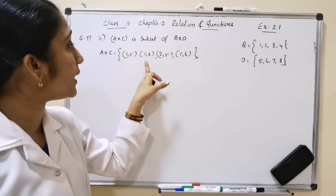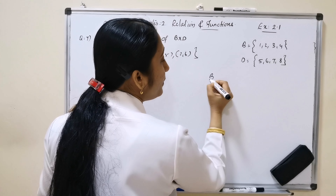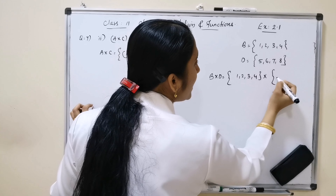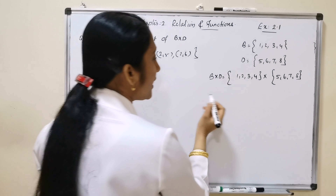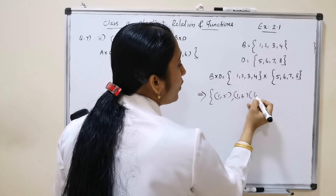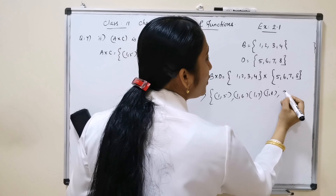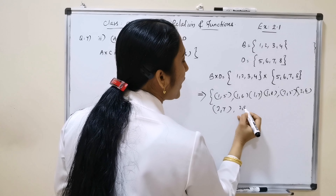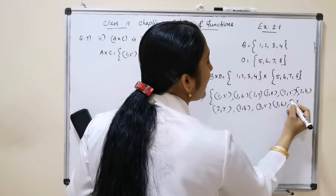Question 7 part (b): We need to verify that A×C ⊆ B×D. We already found A×C = {(1,5),(1,6),(2,5),(2,6)}. Now we find B×D, where B = {1,2,3,4} and D = {5,6,7,8}.